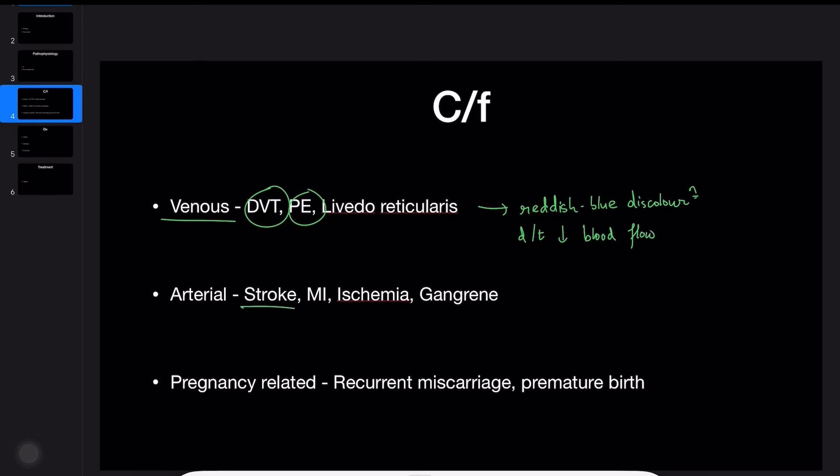In the arterial system, stroke, MI, ischemia, and gangrene may occur, all due to decreased blood flow.